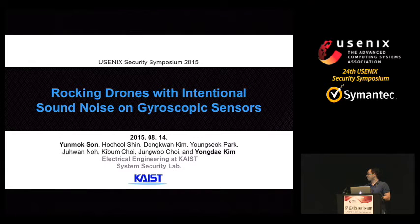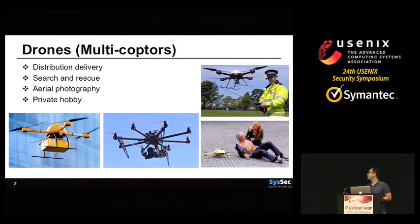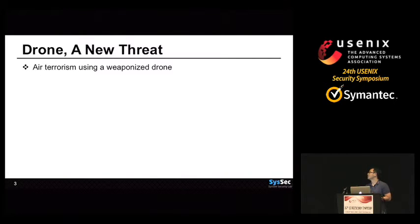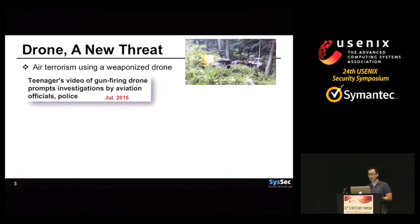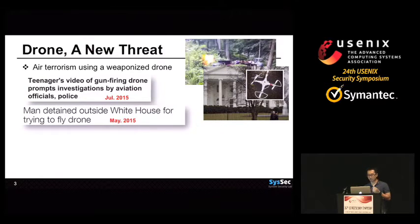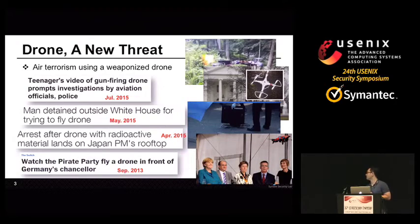Today I am going to talk about drones, especially attacking drones. Drones are widely used for delivery, search and rescue, photography, and private hobbies. Another interesting application is air terrorism using a weaponized drone. A few weeks ago, a gun-firing drone was a big issue in the U.S., because this drone can attack someone by itself. Also recently, an unauthorized drone approached some important places or people very closely. These happenings show that some attacks using drones are possible, and they are not easy to detect or defend.